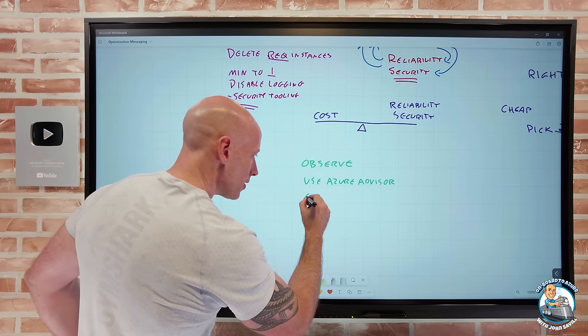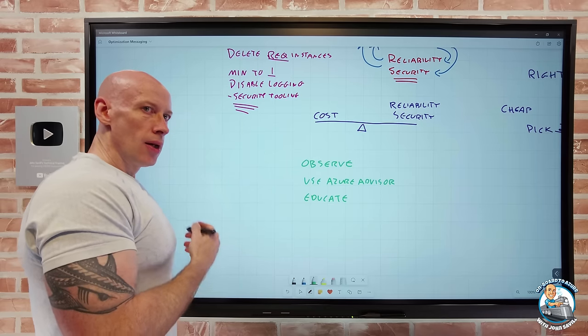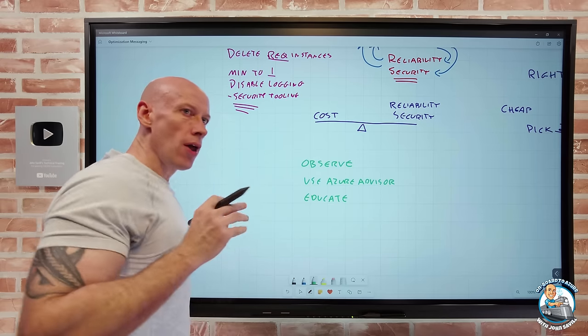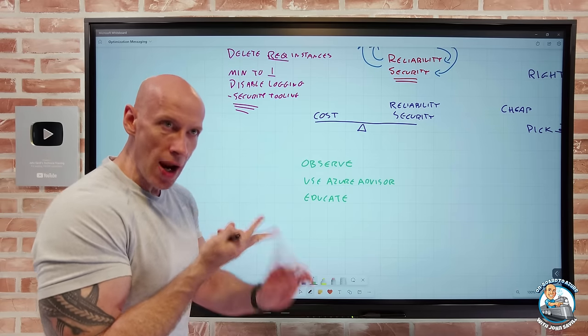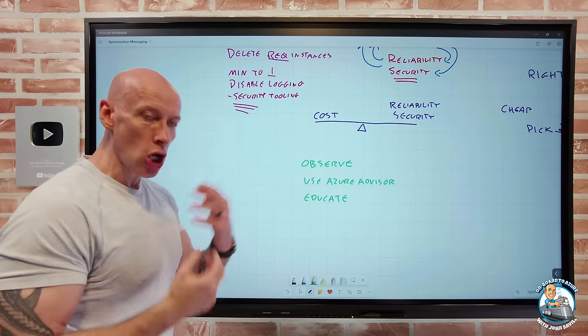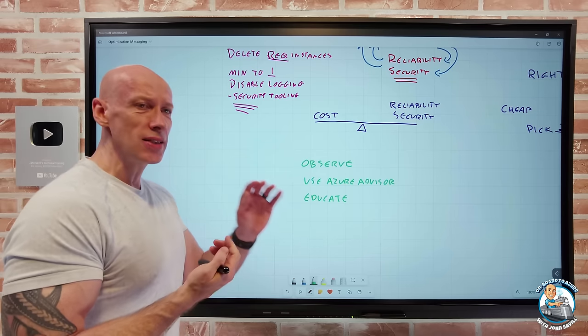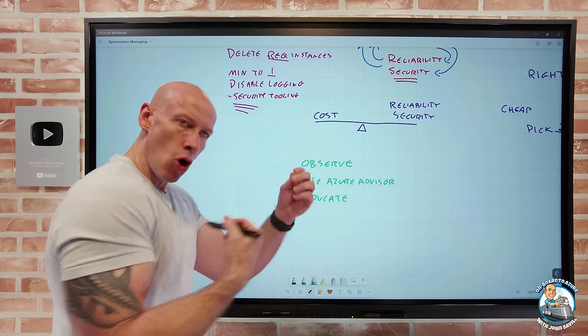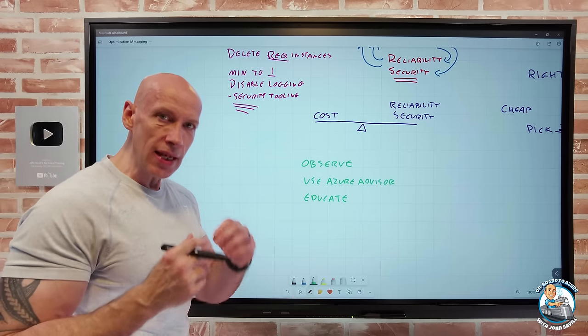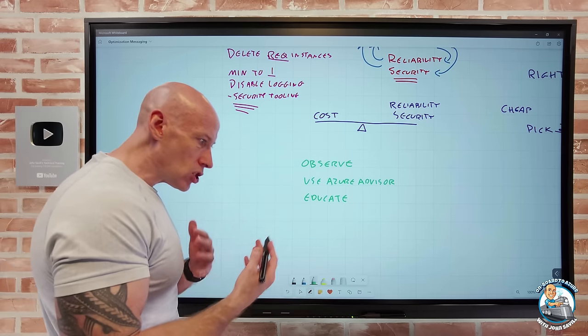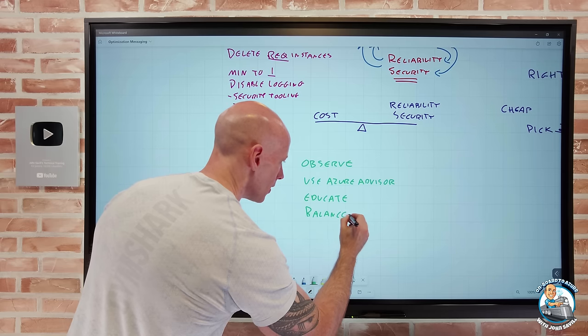And then when we get an idea of maybe where the key areas are, let's help educate the organization, educate them on WAF, educate them on the trade-offs and the balance and our company's requirements around reliability, around security. They don't just go and turn off. What is my apps SLA, my SLO, my recovery point objective, my recovery time objective? Keep those in mind as I'm optimizing. Don't sacrifice. Hey, we have these requirements for logging, for auditing. Don't sacrifice those things to help educate. And then what we do is we're going to create a balanced message.